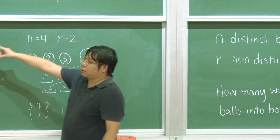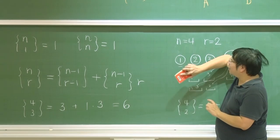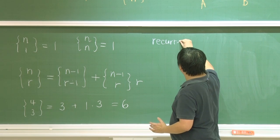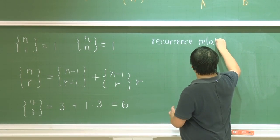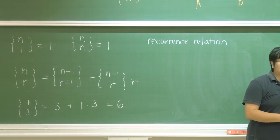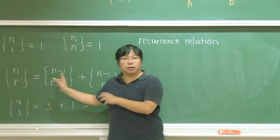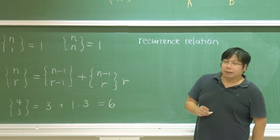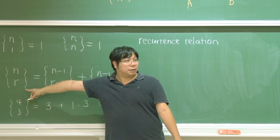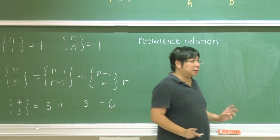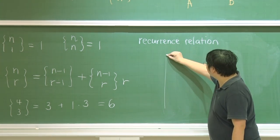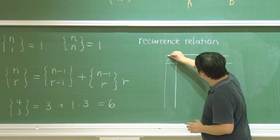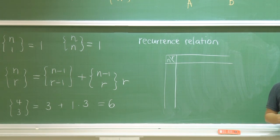This is the so-called recurrence relation. A recurrence relation means we are representing one thing based on other similar things — referring to itself. This recurrence relation has a good property: if the smaller terms are already computed, we can compute larger terms using a method of table filling.